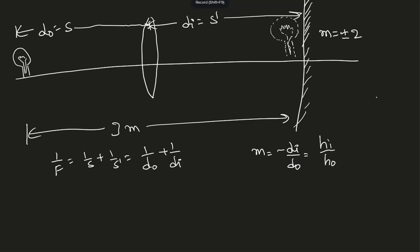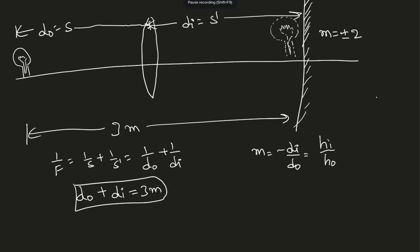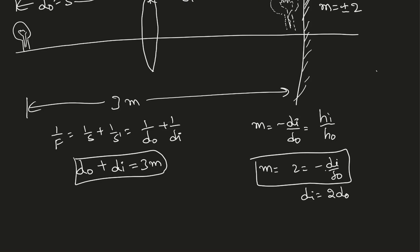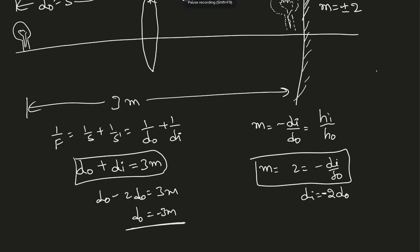From the given data, all I know is that d-naught + d-i = 3 meters, and the magnification factor is plus or minus 2. Starting with m = +2: that means d-i = -2 × d-naught. Substituting: d-naught + (-2 × d-naught) = 3 meters, giving d-naught = -3 meters. That doesn't make sense because the object distance must be positive, so the magnification factor must be negative.